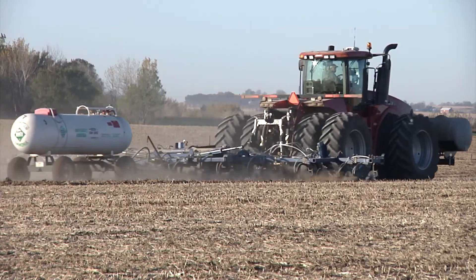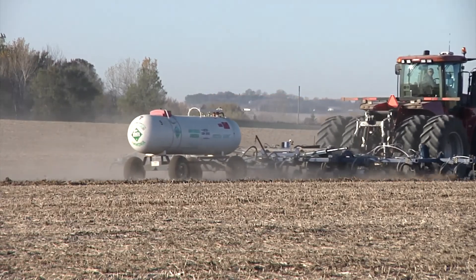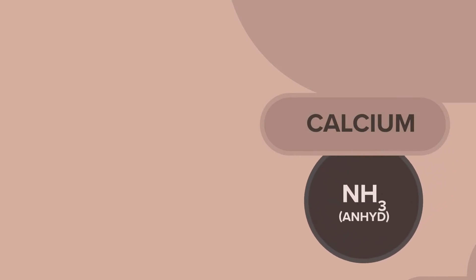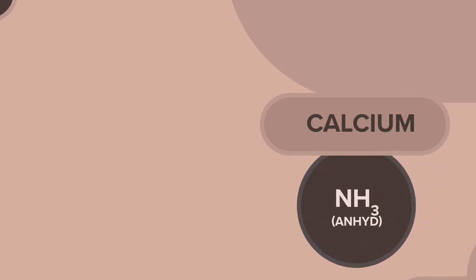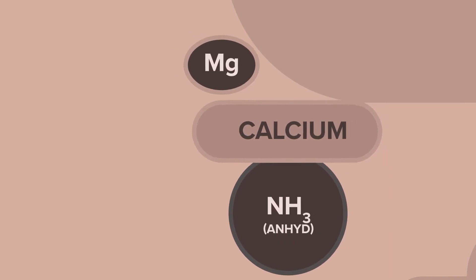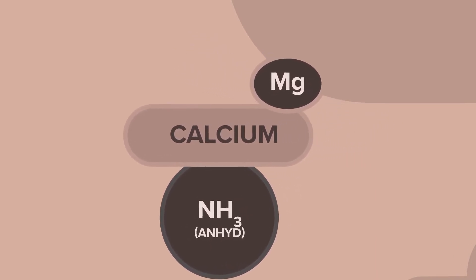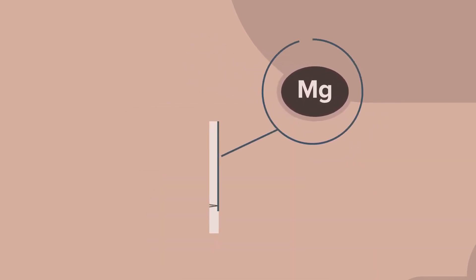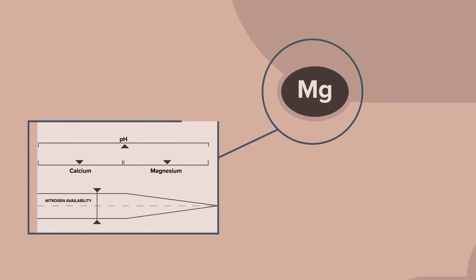One circumstance we see a lot of times with people that use a lot of anhydrous is that anhydrous can strip calcium off the soil colloid and allow magnesium to take its place. The chemical reaction that results in increased magnesium is going to cause you to have to apply more nitrogen.